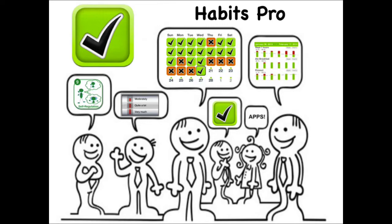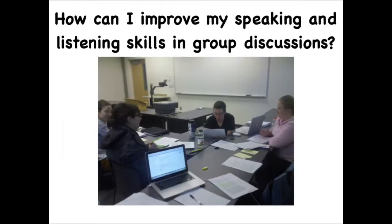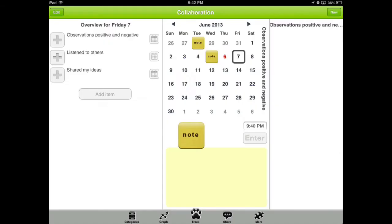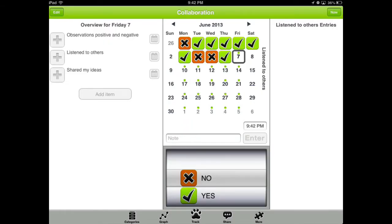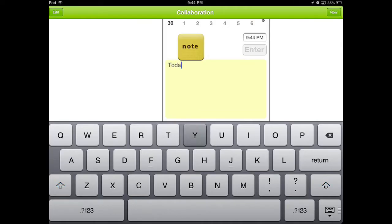Habits Pro is an excellent tool to support students as they develop self-assessment and reflection strategies and build a more collaborative classroom environment. In this activity, students explore the question: how can I improve my speaking and listening skills in group discussions? To help answer this question, the class will focus on one or two skills, highlighting them before each group discussion. Tell students that of greater importance is their focus on intentionally working to improve their active participation in group discussions. They can do this by naming and tracking the related strategies using Habits Pro.